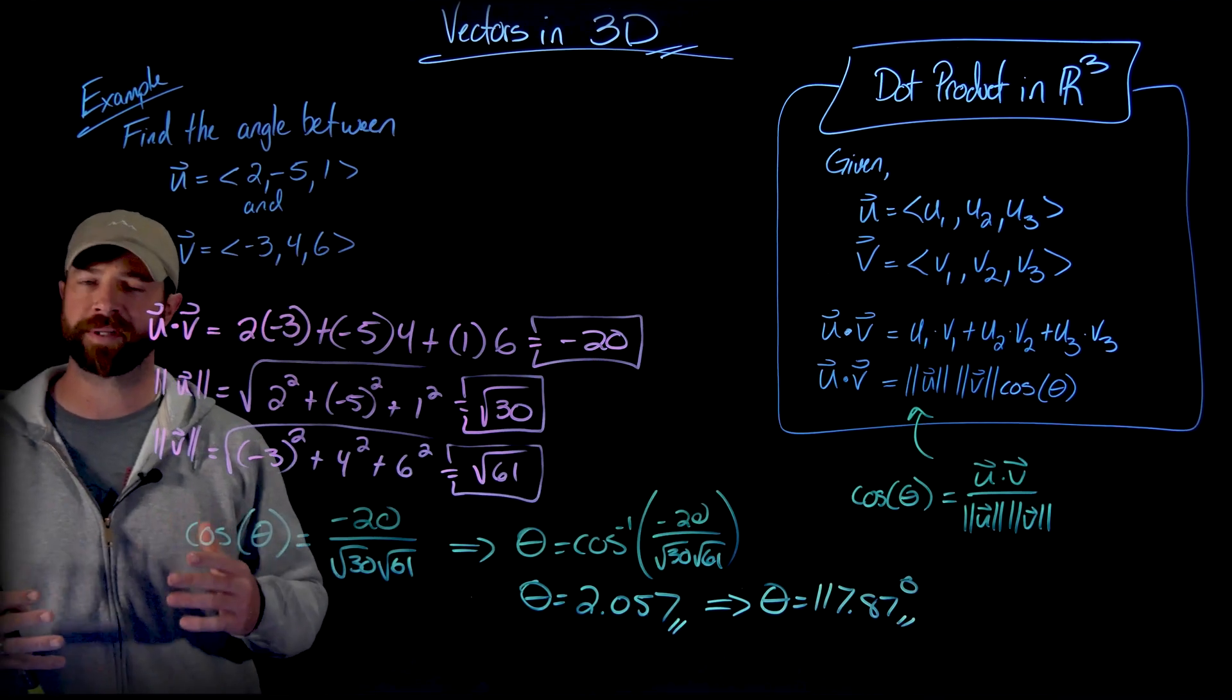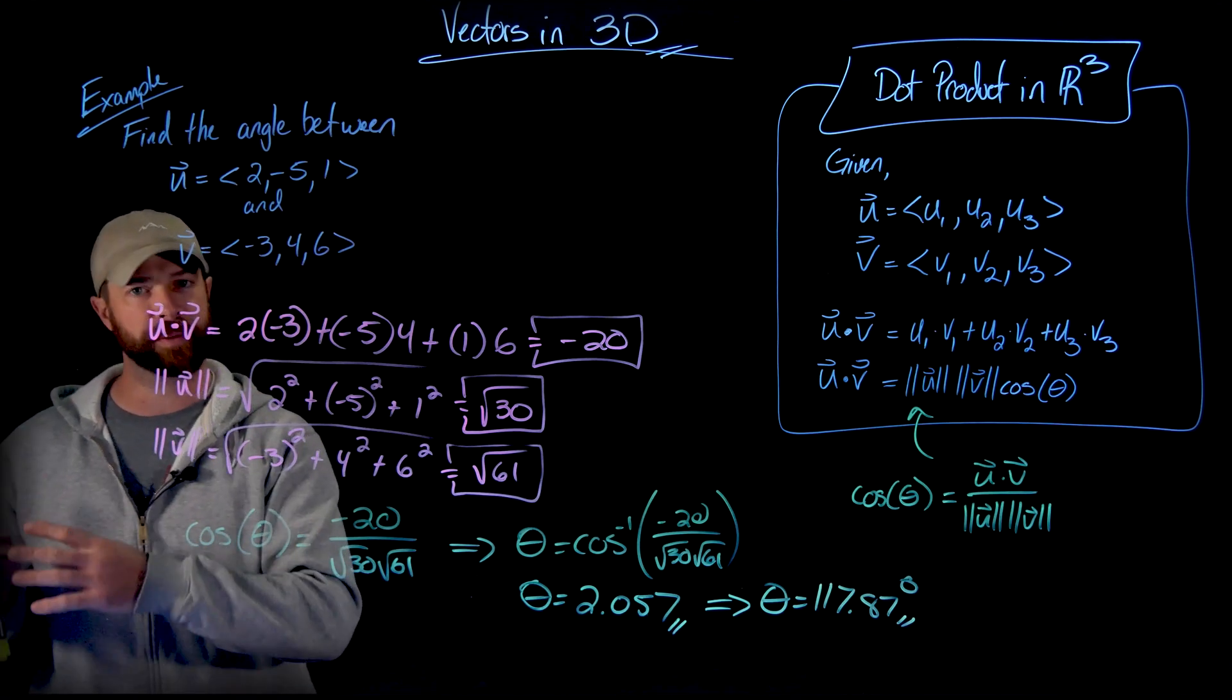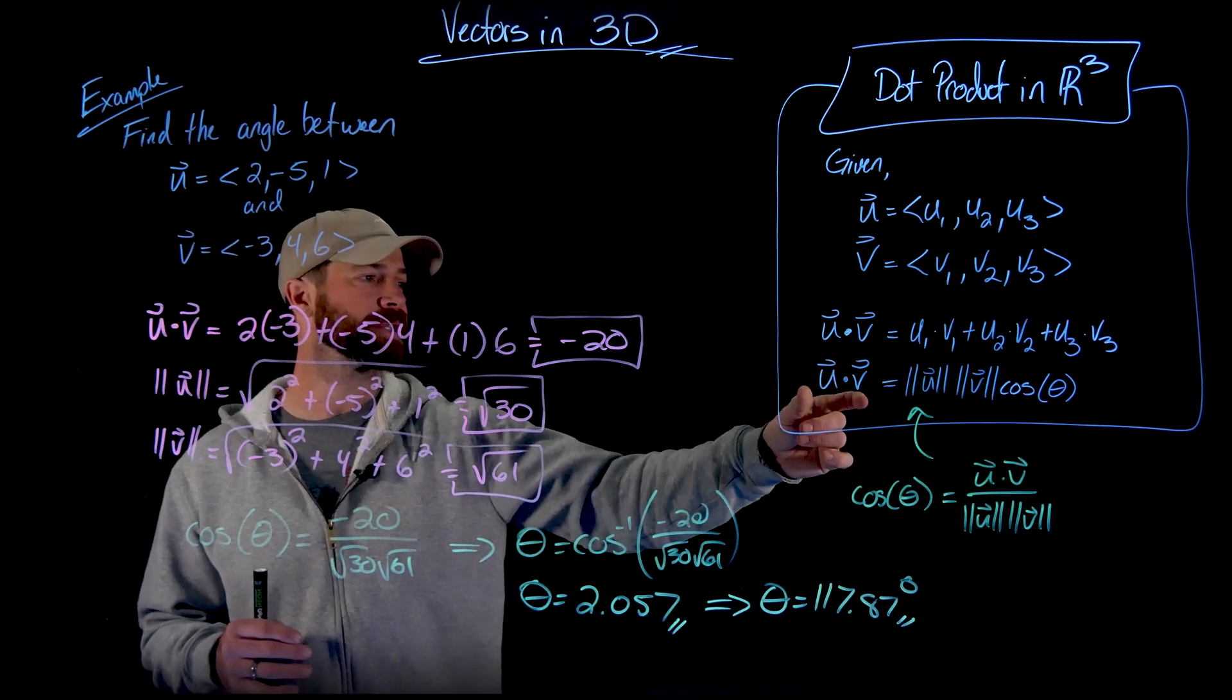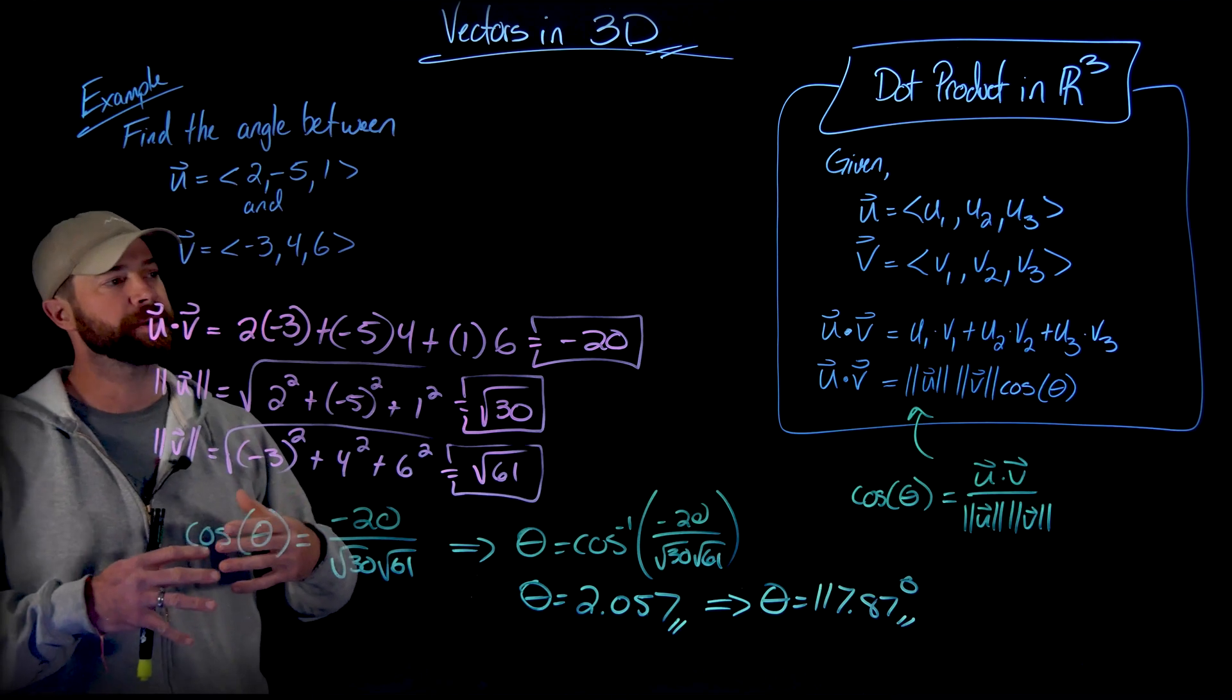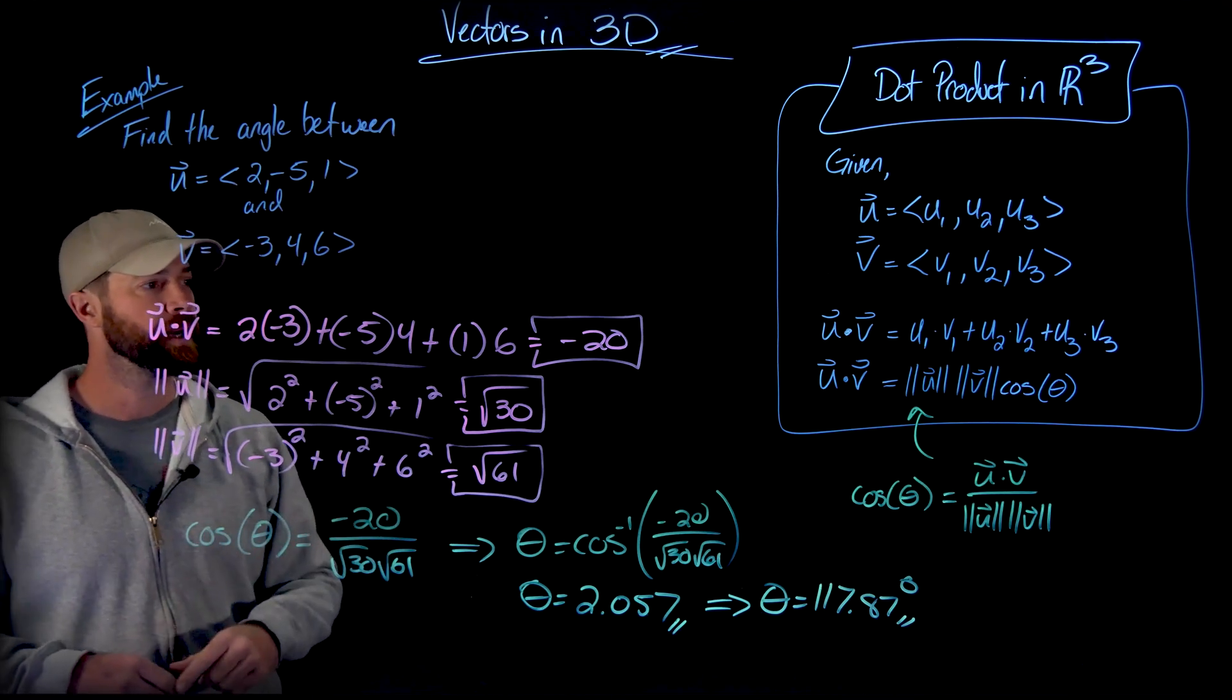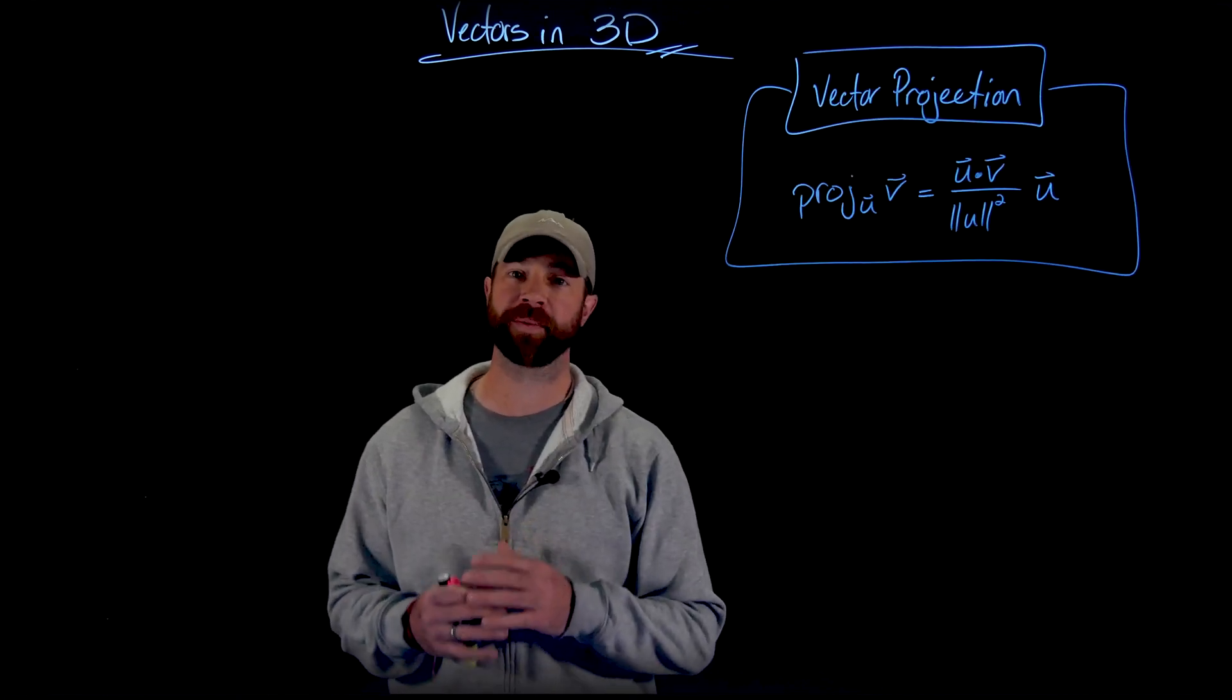So again, quickly define the dot product between two three-dimensional vectors, exactly the same as we did with two-dimensional vectors. Importantly though, is always to have both of these definitions in your hip pocket in order to really talk about the relationship between the magnitudes, the dot product, and the angle between the two vectors. And again, as we did with two-dimensional vectors, we have the projections of one vector onto another vector.